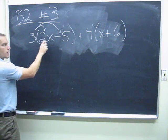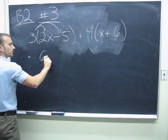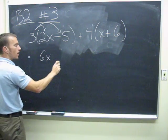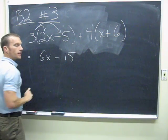So 3 times the x term, 2x, equals 6x. 3 times the negative 5, negative 15.